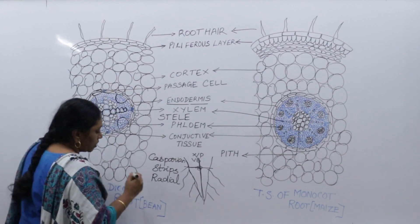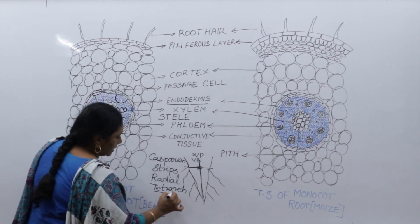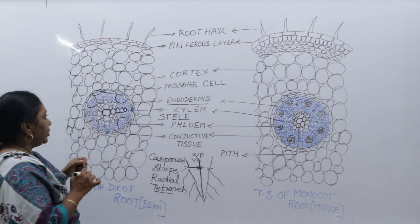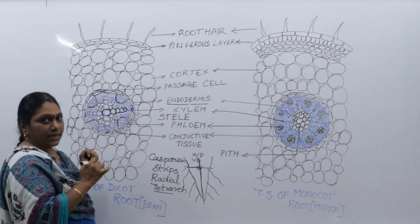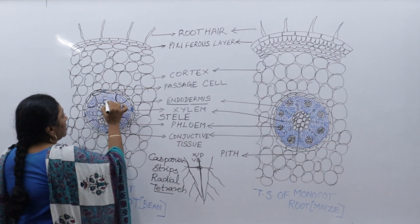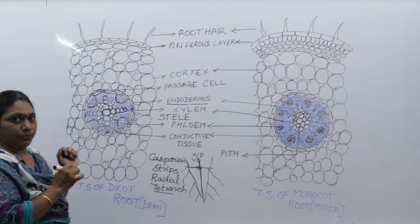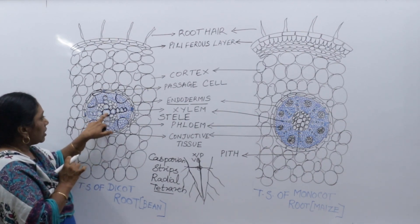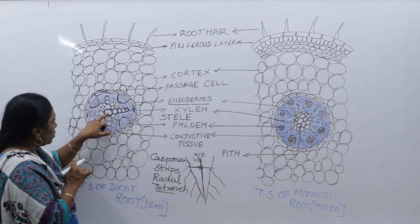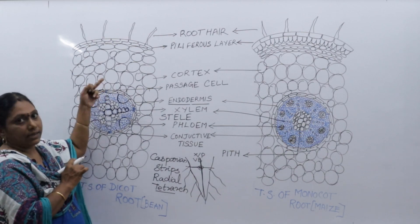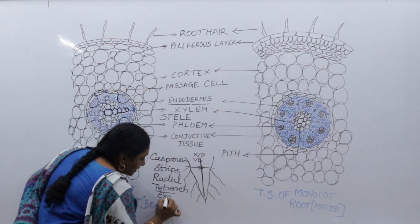Looking at the xylem, there are four groups — one, two, three, four — so we call it tetraarch (tetra means four). The large-sized cells of xylem are called as metaxylem. Moving outward, the cell size decreases. The big cell is metaxylem and the small cell is protoxylem. When protoxylem faces outside, away from the center, we call that arrangement as exarch.